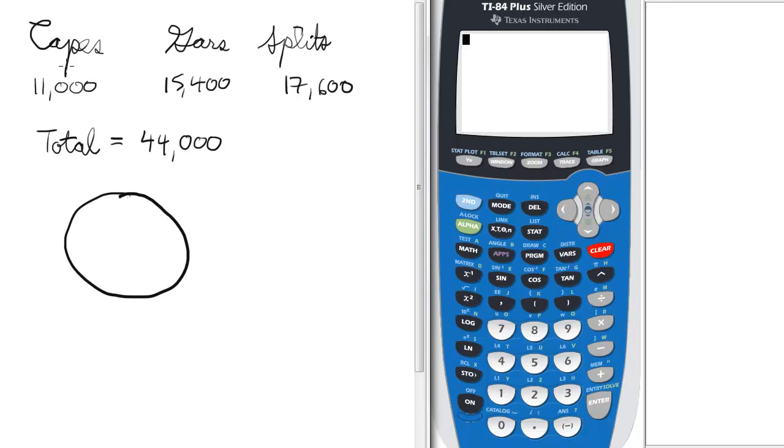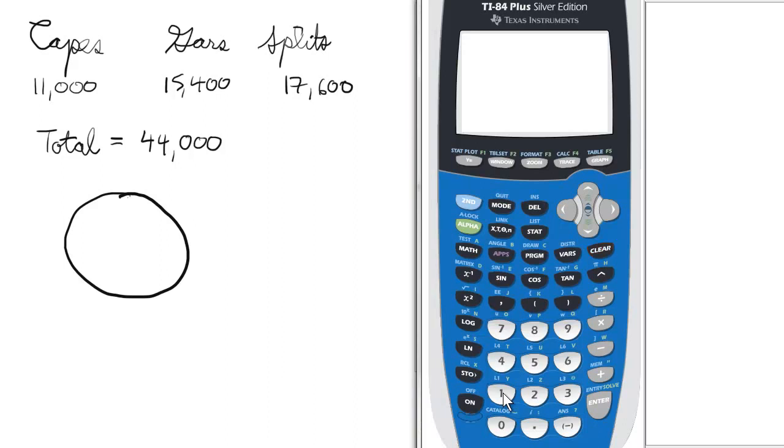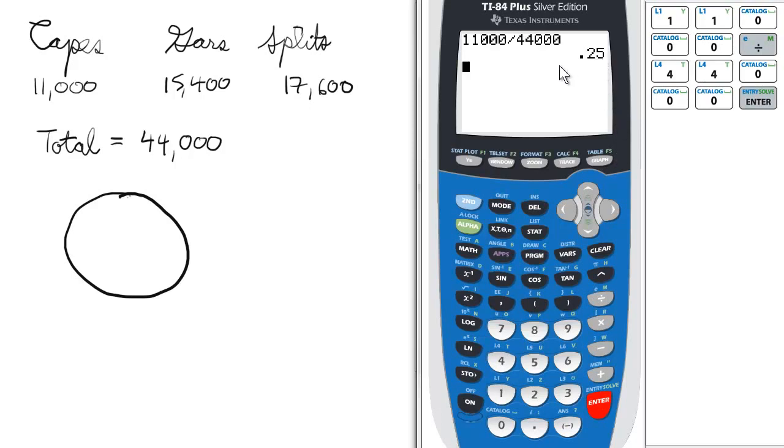For each part of the pie chart, we take the number of a certain class, in this case capes, and divide it by the total. So we'll take 11,000 divided by 44,000, and that's 0.25, which is 25%.